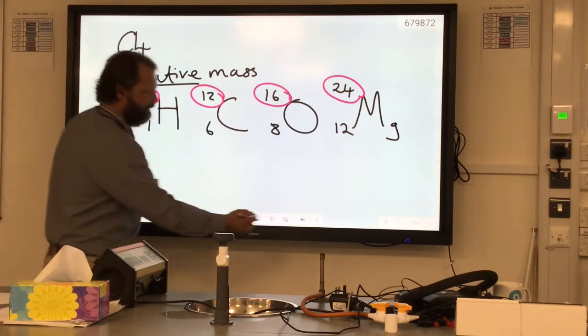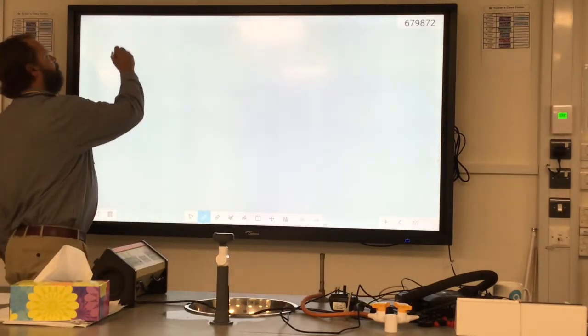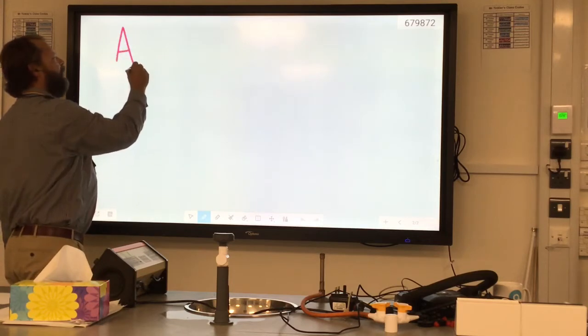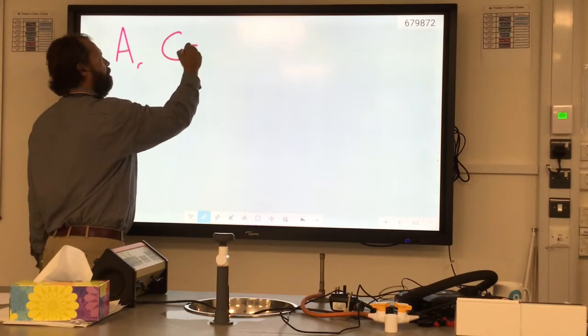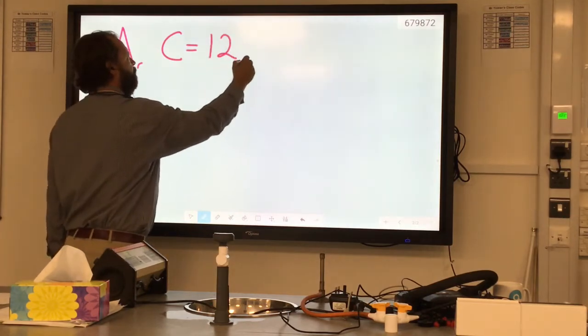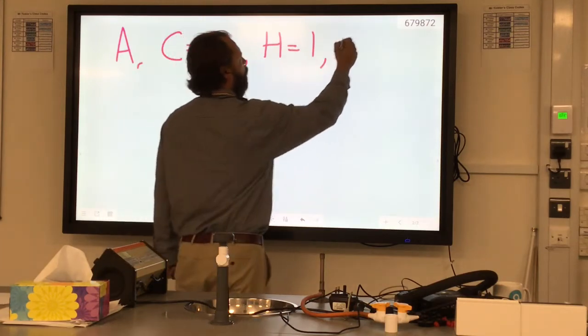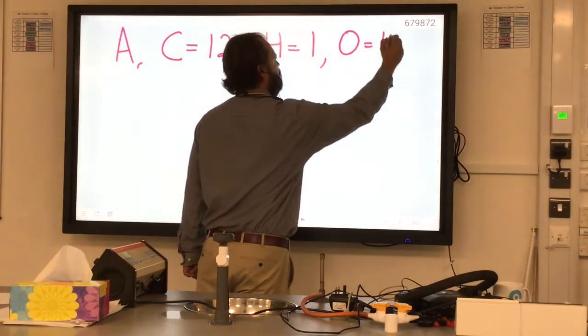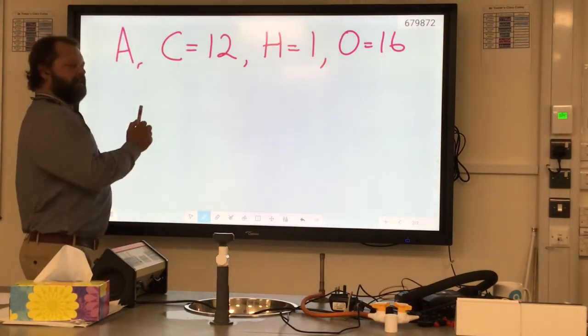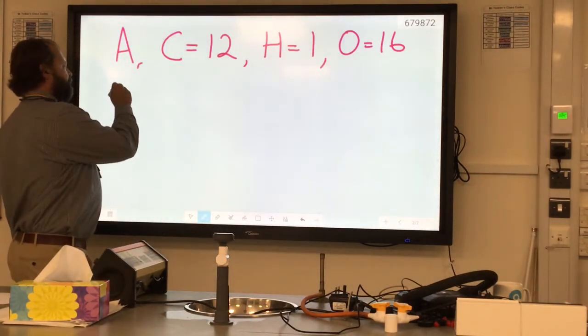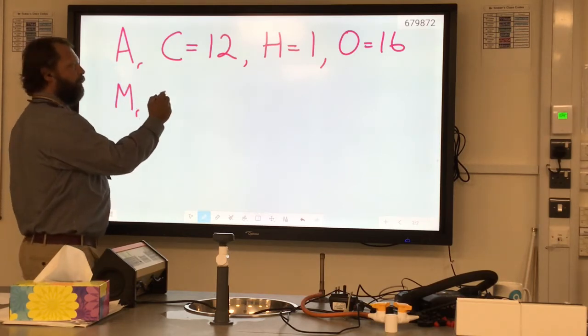In the exam, when you see these masses, they're going to be written like this. Relative atomic mass of carbon is 12, of hydrogen is 1, of oxygen is 16, and so on. We can take these individual masses and use them to work out the relative molecular mass of a compound.